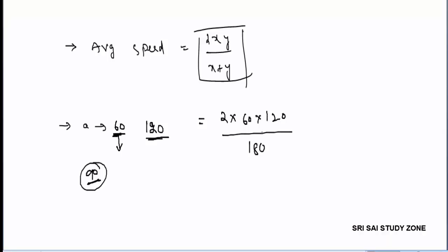Here 60 cancels directly, 3 times cancel, giving 3 into 40 cancel, so the average speed equals 80 km per hour.